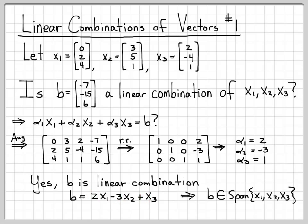Another way of saying this mathematically is that b is in the span of x1, x2, and x3. Another way of saying that b is a linear combination of these vectors is to say that b is in the span of the set of these vectors, because the definition of a span of vectors is a set that is the linear combination of all vectors.